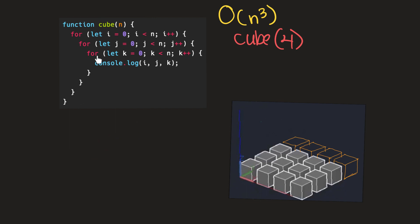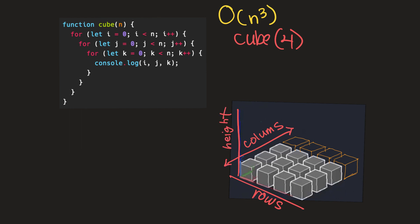For O of n cubed, we're adding an additional nested for loop, so there's no longer just a row and a column. Now we have rows, columns, and a third dimension — which we'll call height. The columns go in one direction, the rows in another, and the height in the third direction. So at this point we're working with a three-dimensional array, not a two-dimensional one. It's the same concept, just not as difficult as it seems — let's draw it out.